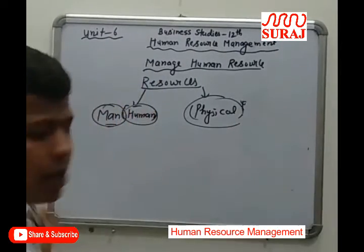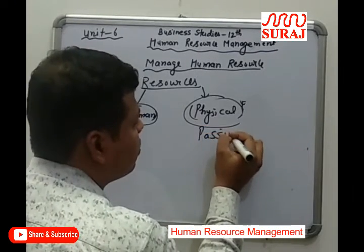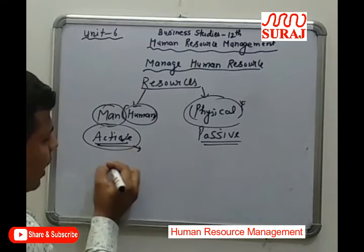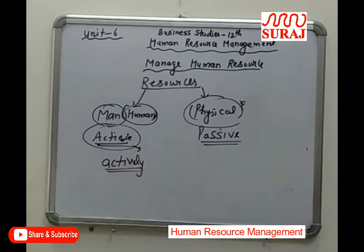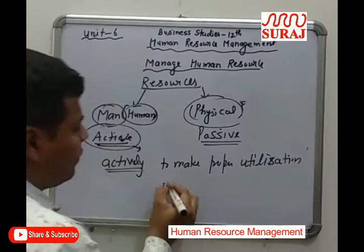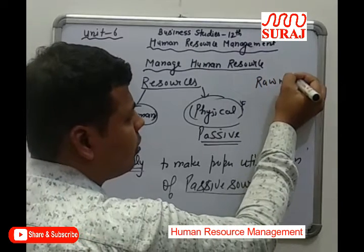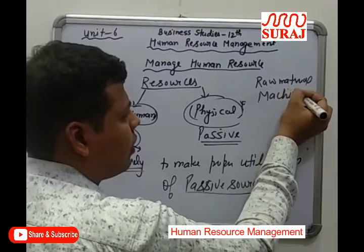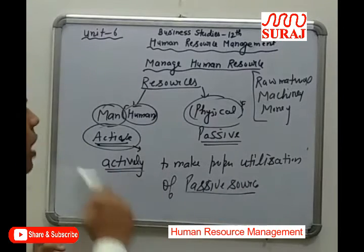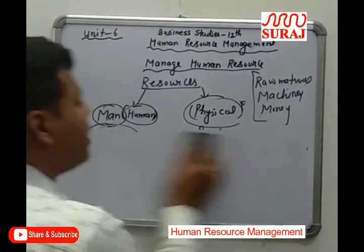Human resources are known as the active resource, and physical resources are known as the passive resource. This is because human beings — employees, workers, and managers — actively participate in the business organization to make proper utilization of physical resources such as raw material, machinery, and money. All physical resources are fully utilized with the help of manpower, so active resources play a very important role in achieving optimum utilization of physical resources.